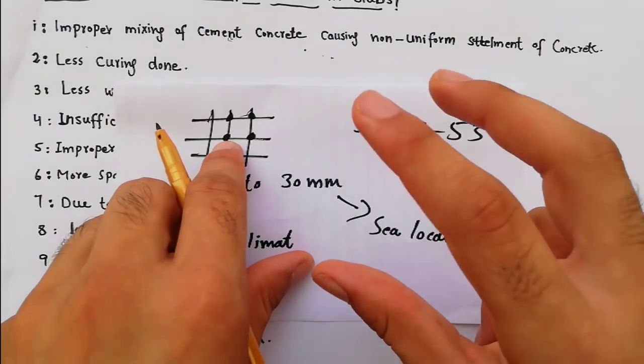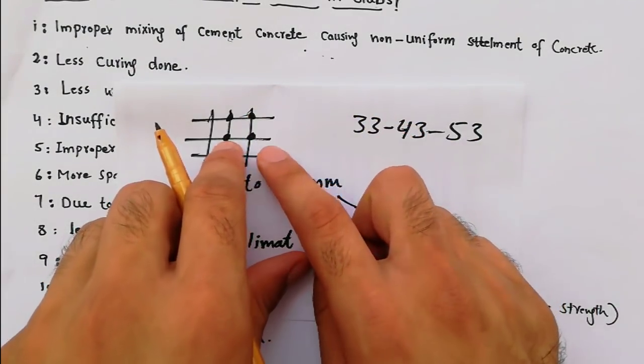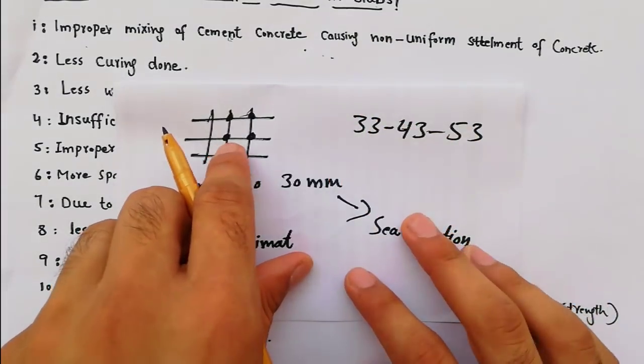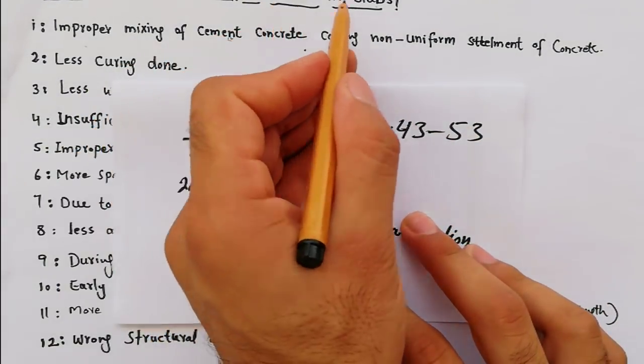So the binding should be proper on steel reinforcement. Otherwise it's opening during concrete work, and this is also a cause of cracks in slabs.